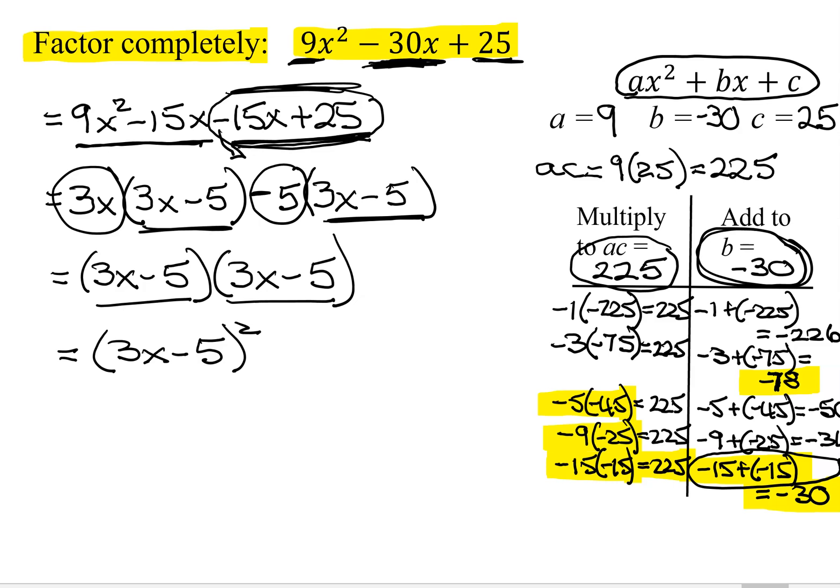So we have factored our polynomial. The preferred method of writing the answer is 3x minus 5 all squared, since it's more efficient. But this is also considered a correct answer.